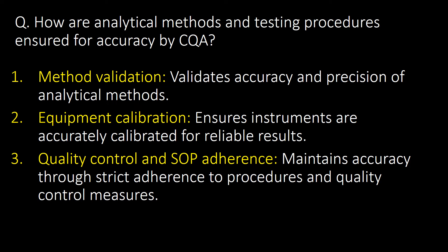How are analytical methods and testing procedures ensured for accuracy by CQA? Analytical methods and testing procedures are ensured for accuracy by method validation, equipment calibration, quality control, and SOP adherence.